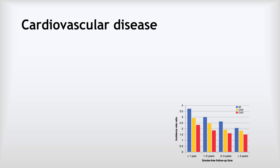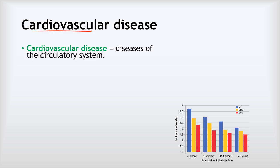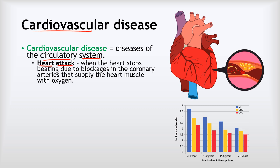Our next non-communicable disease is cardiovascular disease — diseases of the circulatory system, that is our heart and blood vessels. An important example is a heart attack, which happens when the heart stops beating due to blockages in the coronary arteries that supply the heart muscle with oxygen. We can see on the diagram the arteries running around the outside of the heart bringing blood and oxygen to the heart muscle. Blockages start to build up in those arteries, making it hard for blood cells to pass through, and eventually the artery can become entirely blocked so that part of the heart stops beating, leading to the entire heart stopping.